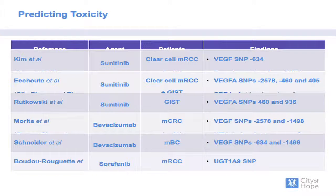Across several trials looking at SNPs and toxicities in sunitinib-treated clear cell metastatic kidney cancer patients, we see distinct SNPs associated with hypertension and others with hypothyroidism. In the context of bevacizumab therapy in breast cancer and renal cell carcinoma cohorts, distinct SNPs are also associated with hypertension. For sorafenib, UGT1A9 polymorphisms can predict the onset and frequency of grade ≥2 diarrhea. Despite this heterogeneous array of data, SNPs are not yet ready for prime time for toxicity prediction in the clinic.